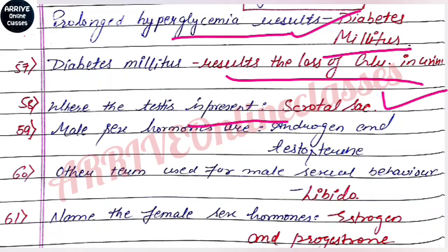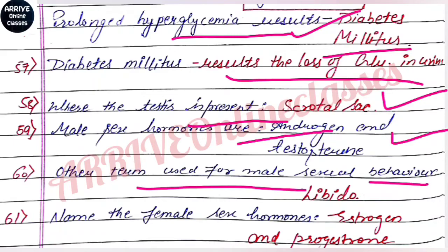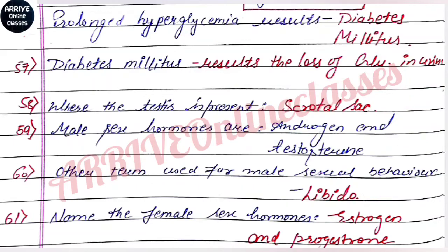The testis is present in the scrotal sac, which is outside the abdominal part, so that low temperature is maintained for spermatogenesis. Male hormones are androgens and testosterone. Another term used for male sexual behaviour is libido.